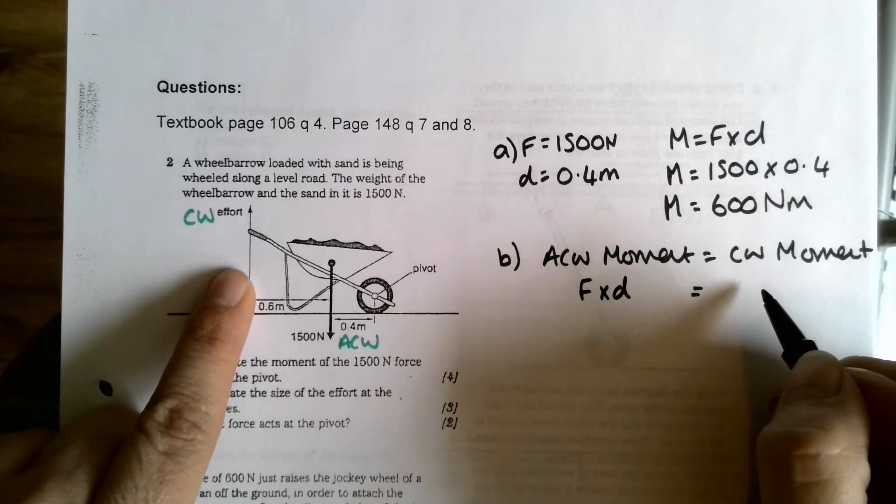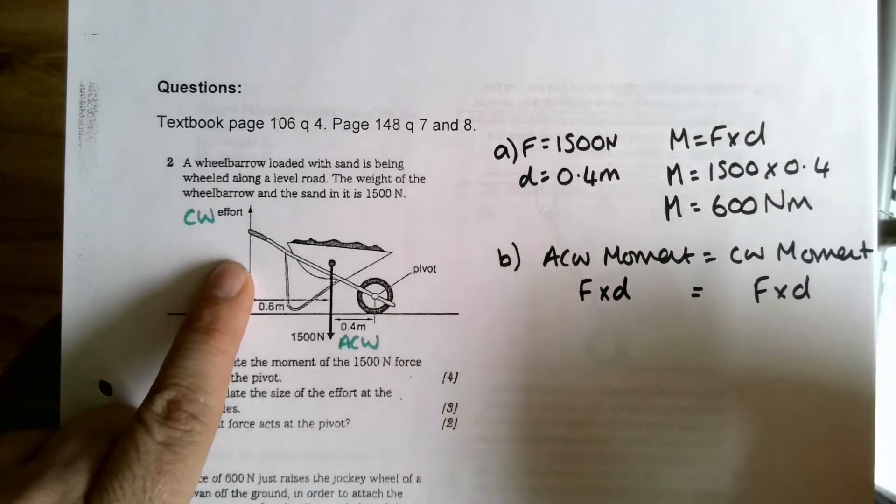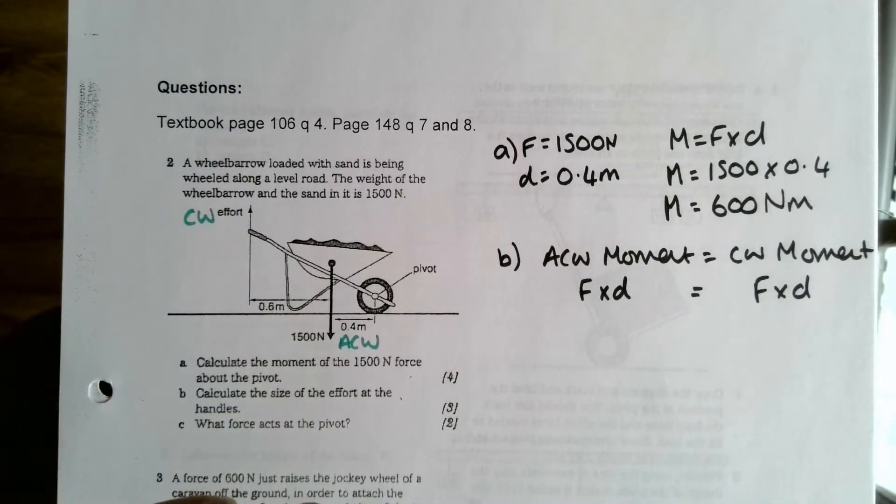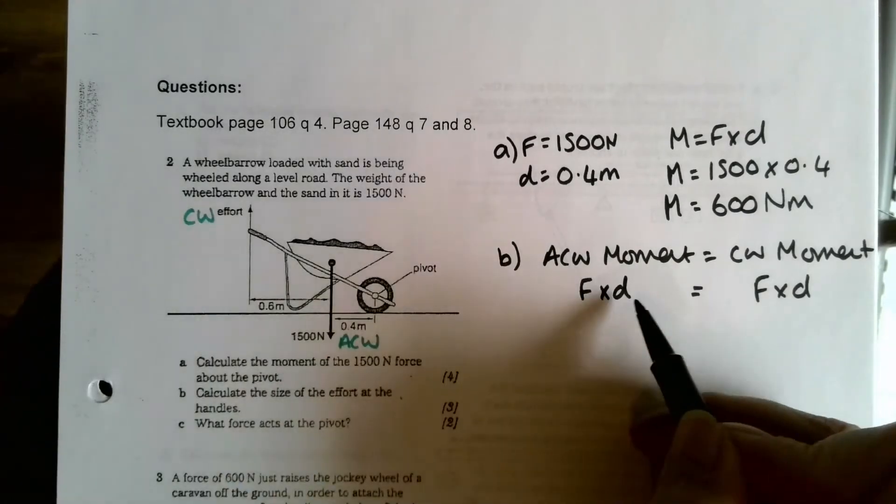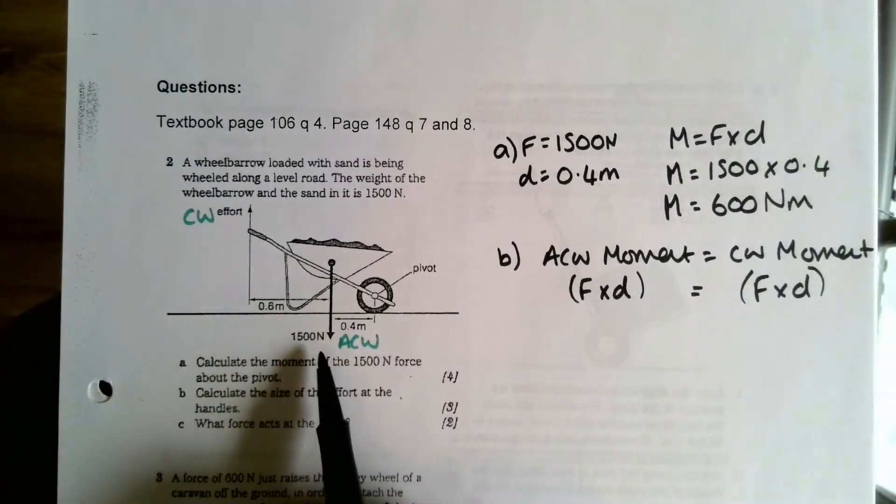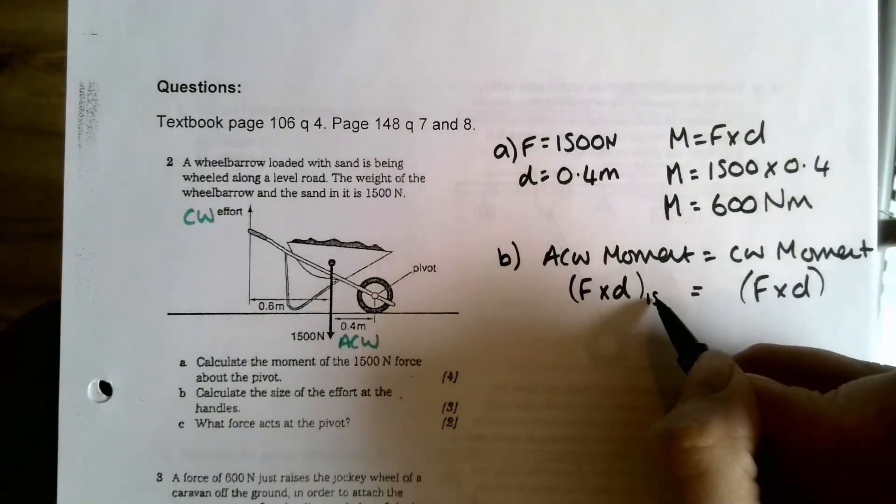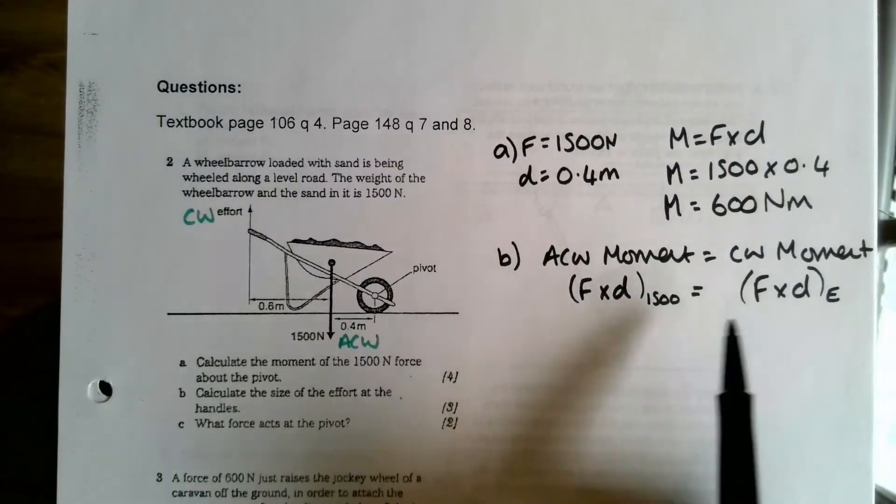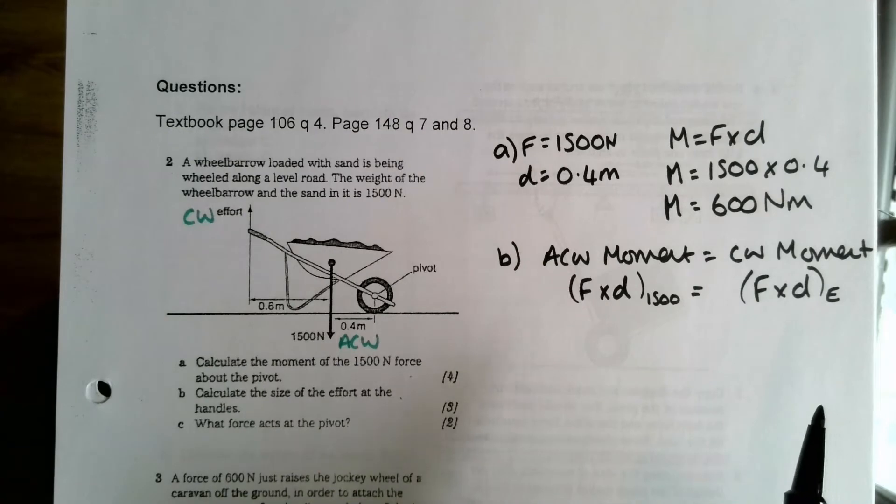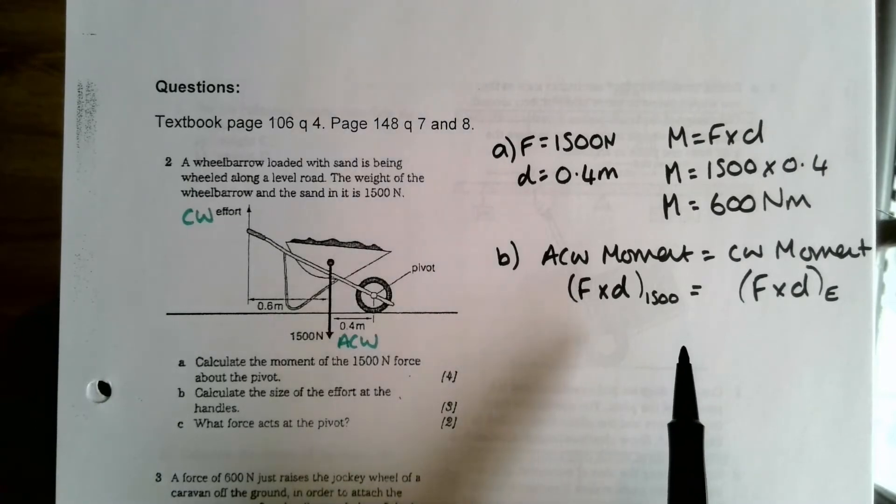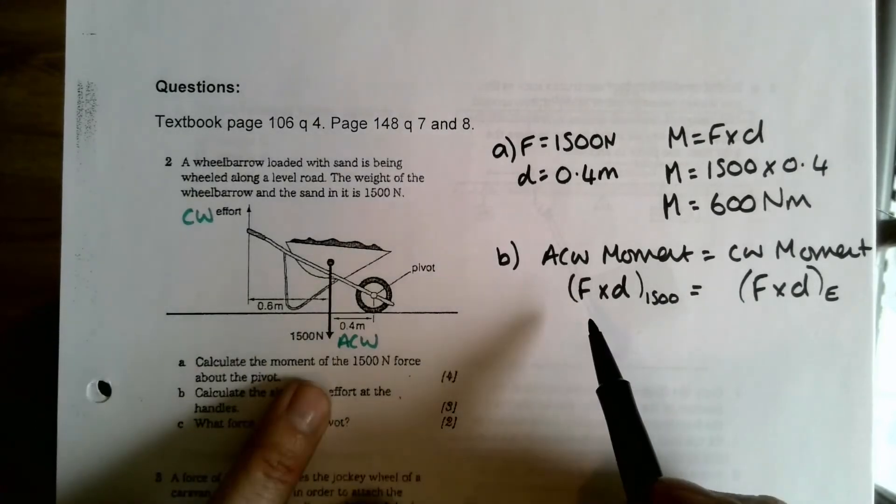Okay, so anti-clockwise I have my force from the weight of the wheelbarrow and the stuff inside it, and then my clockwise comes from the effort. Now one thing that I quite often do that some of my pupils really like and some of my pupils really don't like, so you can decide what camp you're in here, I like to label this to show which one I'm talking about. So I'll just stick brackets around that for my anti-clockwise that is for this one here, so I just label that with a subscript 1500. And for my clockwise that's the effort, so just stick an e for that. So this little step I suppose is not a hundred percent necessary, but it helps me keep organized in my work. But for some reason people sometimes hate it. Don't know why. So for my anti-clockwise moment the force is 1500.